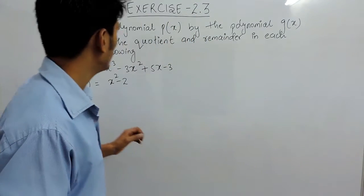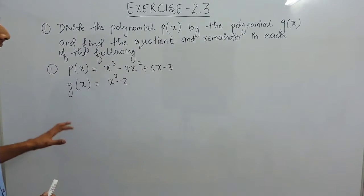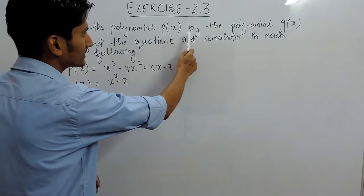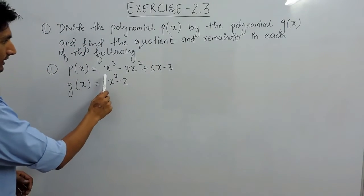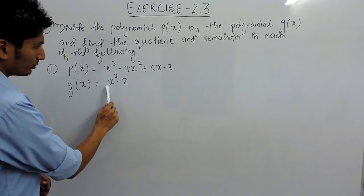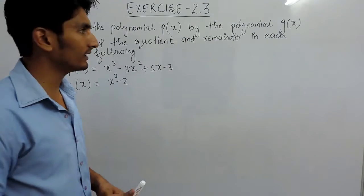Hello everyone, in this video we are going to solve question number one of exercise 2.3. In this question we have to divide polynomial p(x) by the polynomial g(x), and find the quotient and remainder in each.